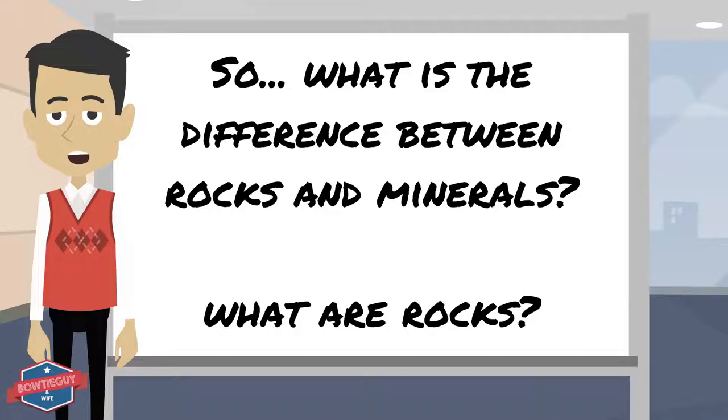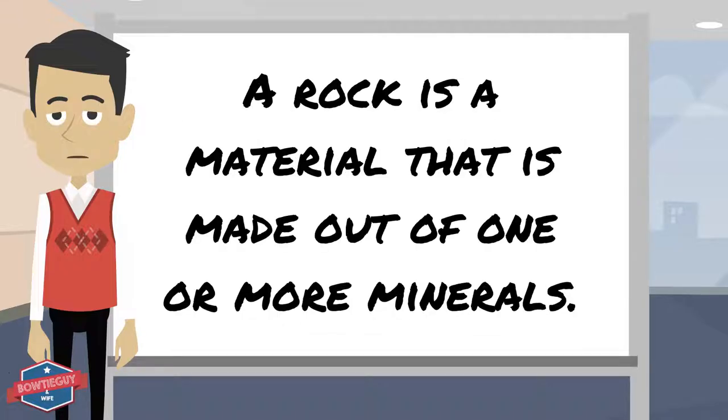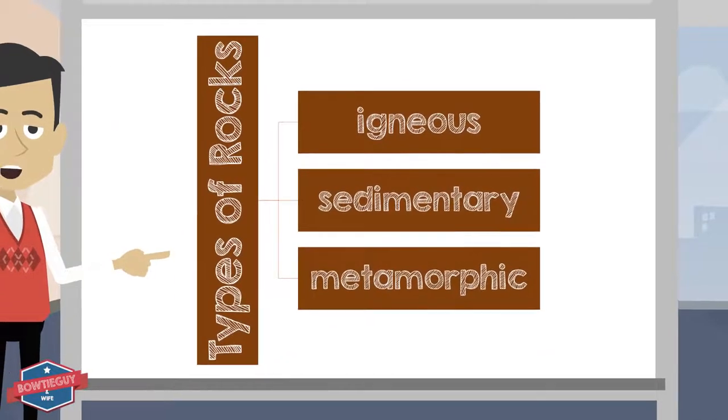So what is the difference between rocks and minerals? What are rocks? A rock is a mineral that is made out of one or more minerals. A mineral is a rock and a rock is a mineral. There are three different types of rocks.